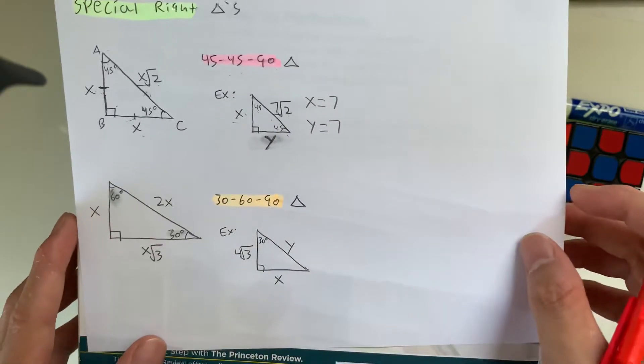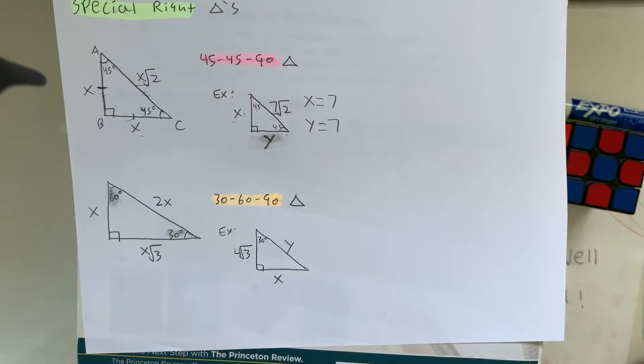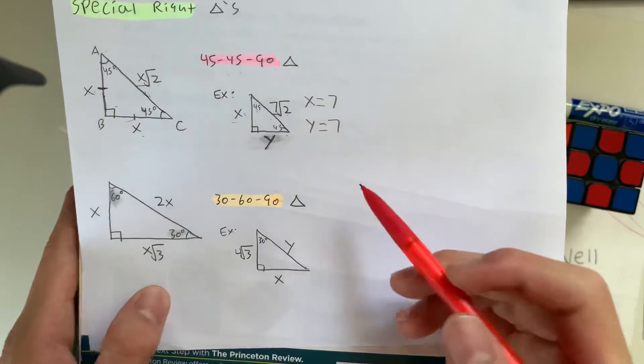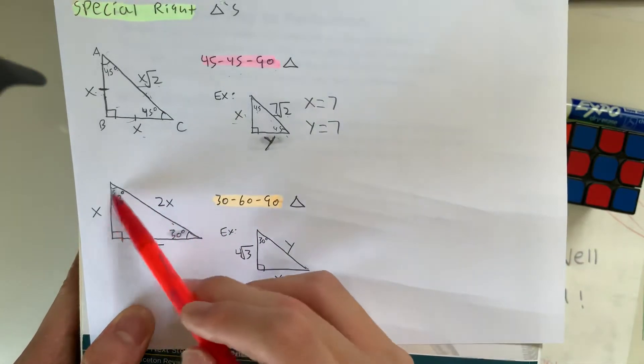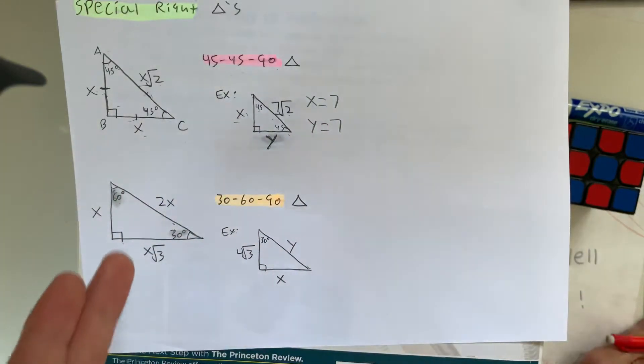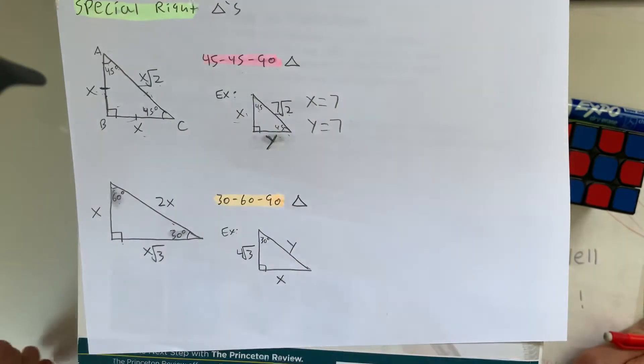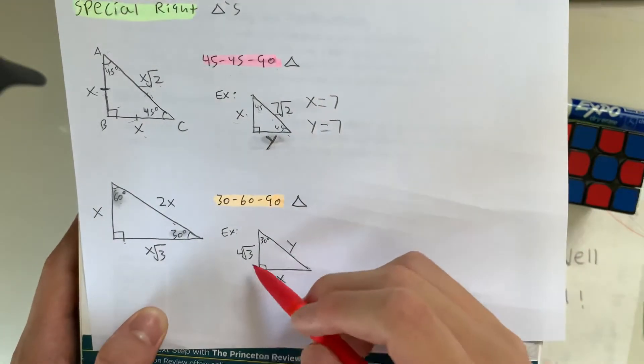And next is the 30-60-90 triangle, which is a little more difficult to understand. But given a triangle with the degree measures of 30, 60, and 90, you can use this formula to find the lengths of the sides. So let's look at this example right here.